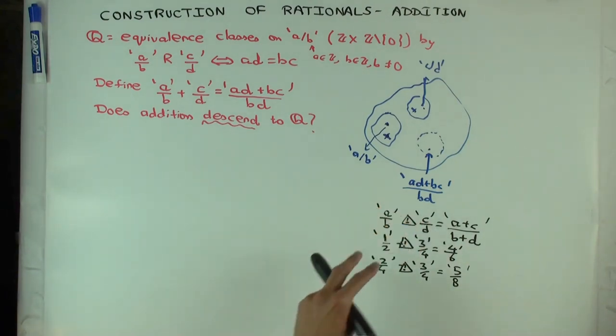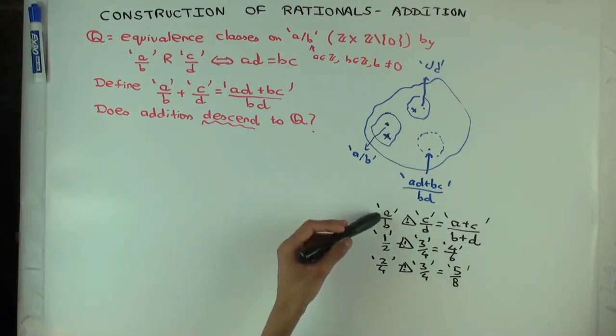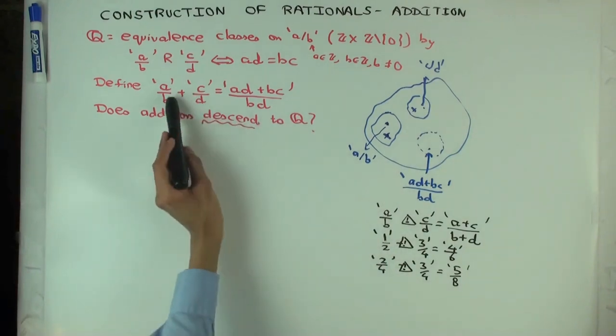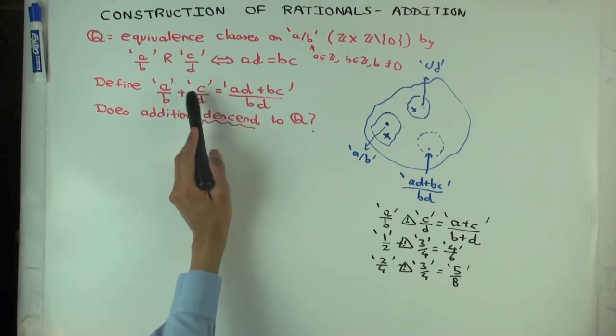So this operation is not, doesn't actually descend to rational numbers. Therefore, what we actually need to show something, to show that this, or this operation actually does descend to the rational numbers.